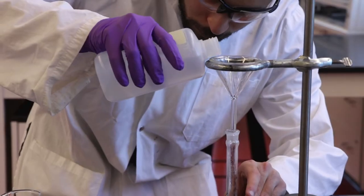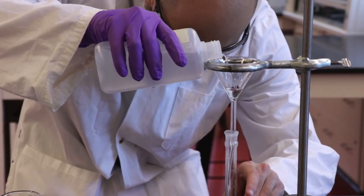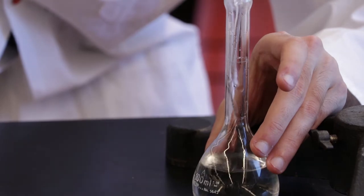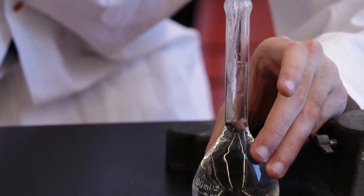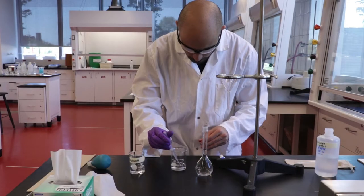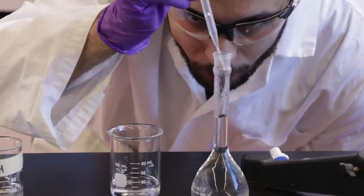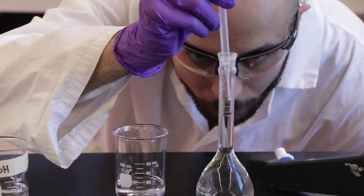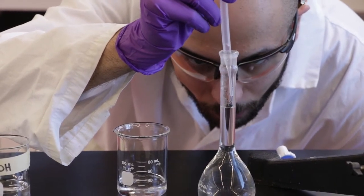Using a wash bottle, fill the volumetric flask with distilled water until the solution is one to two centimeters below the mark. Then using a Pasteur pipette, carefully fill the rest of the volumetric flask with distilled water until the bottom of the meniscus sits on the mark.